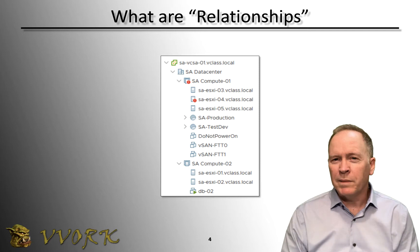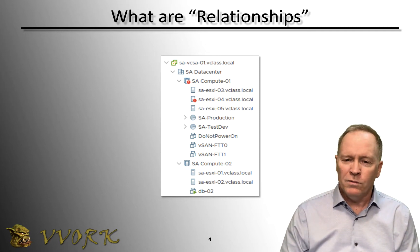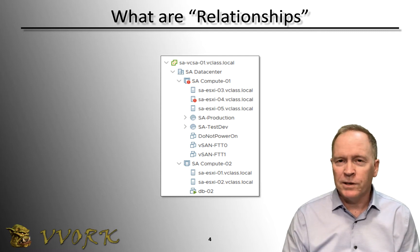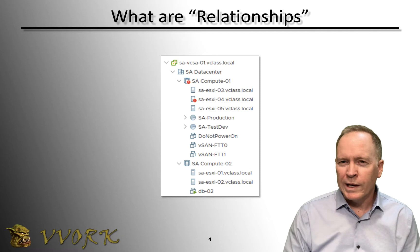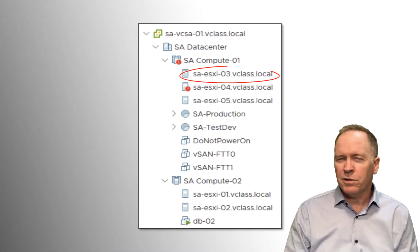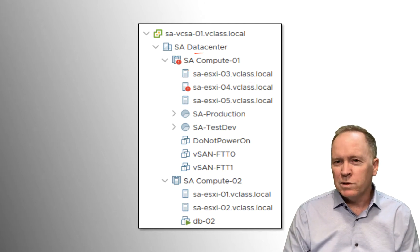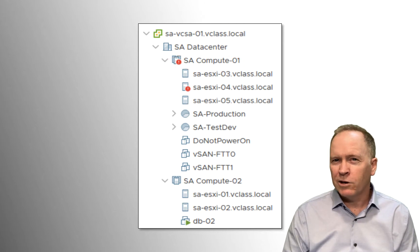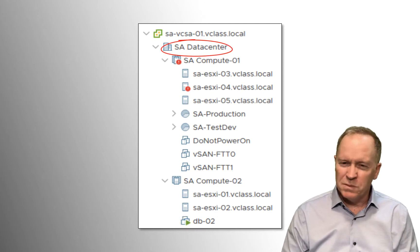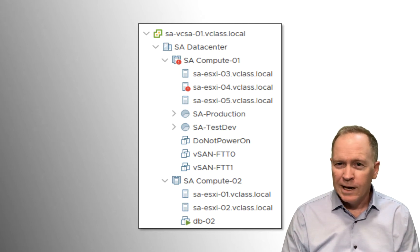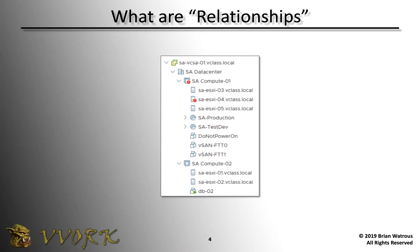You probably already understand what we mean by relationship, but just in case — in our VROPS inventory, or specifically our vSphere inventory, these different objects such as host VMs, clusters, data stores, and so forth have a hierarchical relationship to each other. For instance, host ESXi-03 is the child of the cluster called compute-01, and the virtual machine called db-02 is a descendant of the data center called Site-A data center. These relationships don't just apply to vSphere objects — they also apply and are useful in custom object groups throughout all of realized operations, whether you're working with vSphere objects or other types. This relationship mechanism works for them all.